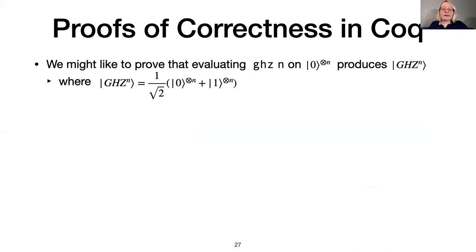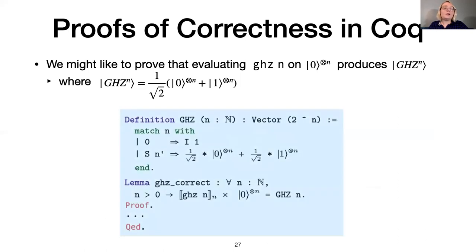Because SQUIRE is embedded in Coq, we can also formally reason about the GHZ program. For example, we can prove that it actually produces the GHZ state, as we have claimed. First, we provide a Coq definition of the GHZ state. Then we say that applying the GHZ program to the n-qubit zero state produces this GHZ state. The proof proceeds by induction on n.